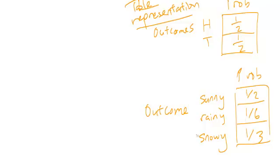and the assignment of probabilities is exactly given by probability of sunny is one half, probability of rainy is one sixth, probability of snowy is one third. And you can check that these actually do add up to one.